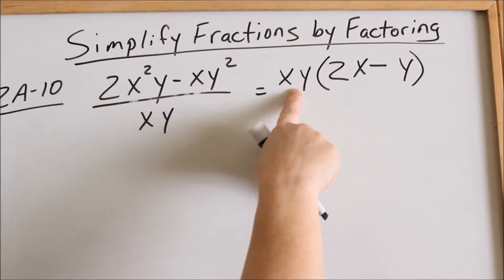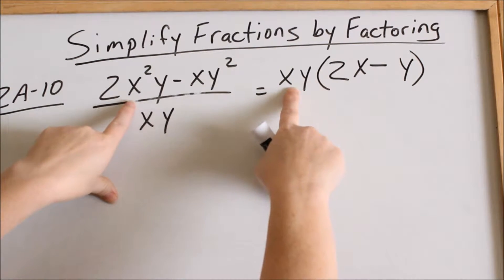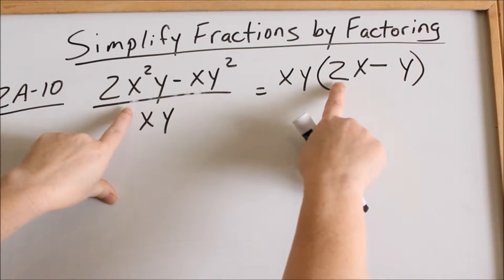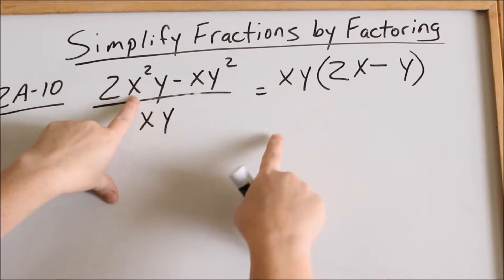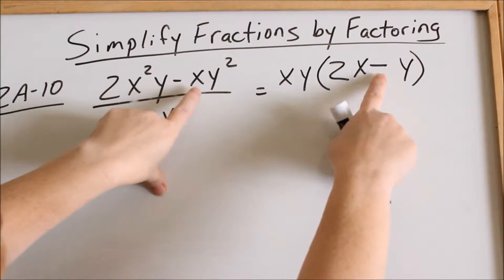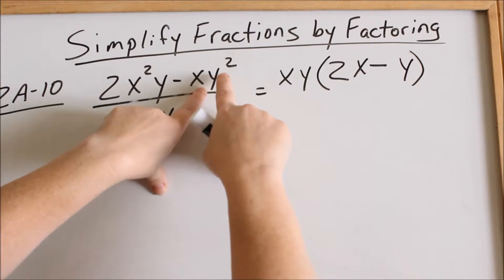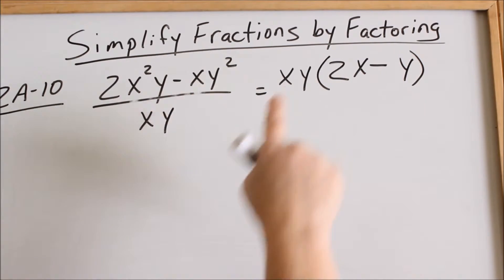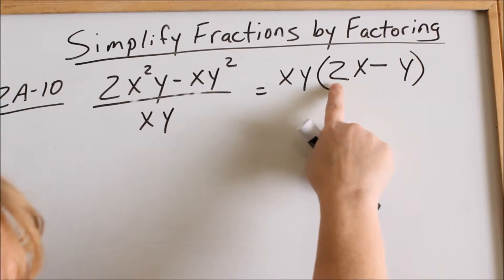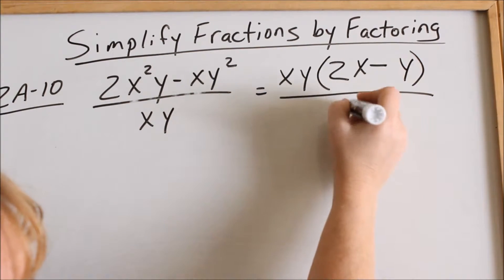When you do this, you should be able to go back and distribute this and get this same thing. So if I distributed xy to 2x, I would get 2x squared y, which is this. Then positive times a negative gives me the negative. xy times y gives me an xy squared, and I get this. So when you go back to distribute, you should get what the original problem is, all over xy.